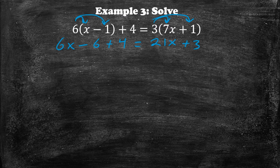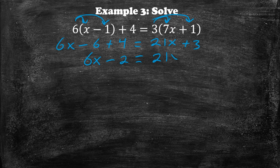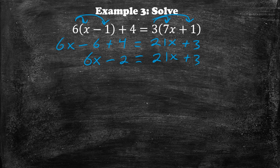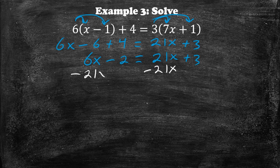On the left-hand side we can simplify further, giving us 6x minus 2 is equal to 21x plus 3. Same concept as the last problem — we want to get the x's to one side and all other numbers to the right-hand side. You can bring 21x to the left or 6x to the right, but I'll subtract 21x from both sides to keep it consistent.